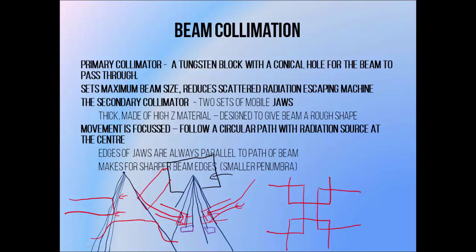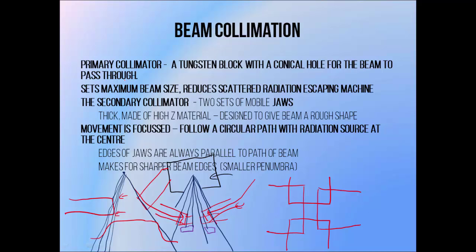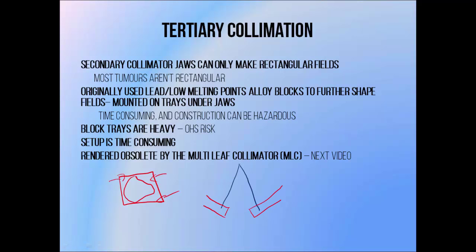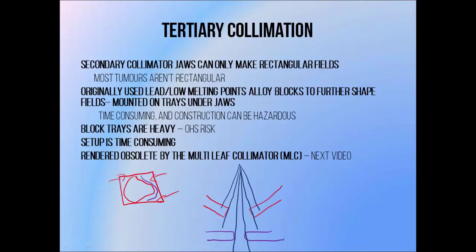There's also a third layer of collimation beneath the secondary collimator jaws, which we call the tertiary collimator. Secondary collimator jaws can only handle rectangular fields, and most treatment targets aren't rectangular, which can result in a lot of dose being delivered to tissues outside of the target without further collimation. Originally this was achieved using lead or low melting point alloy blocks to shape the beam, placed on trays beneath the secondary collimator jaws and arranged to block the field into the required shapes — either generic blocks or custom shapes cast on site. Generic blocks aren't terribly precise, but they're better than using the jaws alone, and making custom blocks can be time consuming and hazardous because it involves working with potentially toxic fumes.